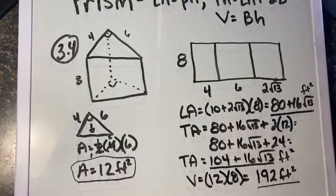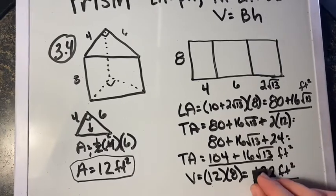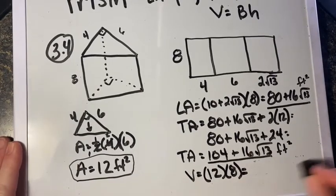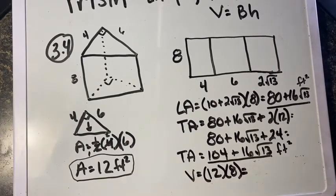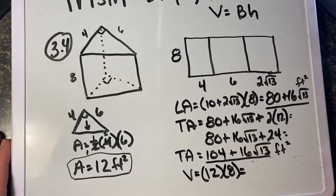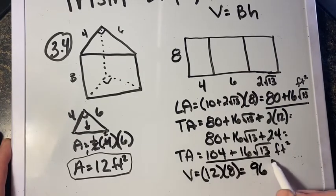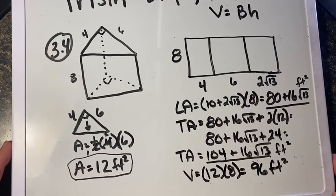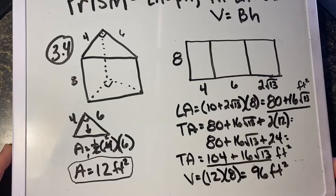Quick error correction — it's not 192 feet. The volume is actually 96 feet squared. 12 times 8 is 96 feet cubed. Sorry, just a misprint there. Correction provided.